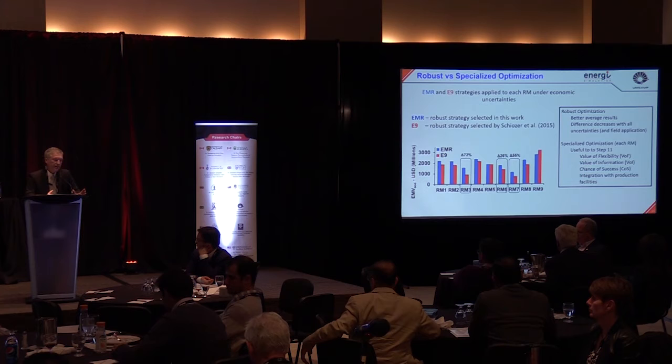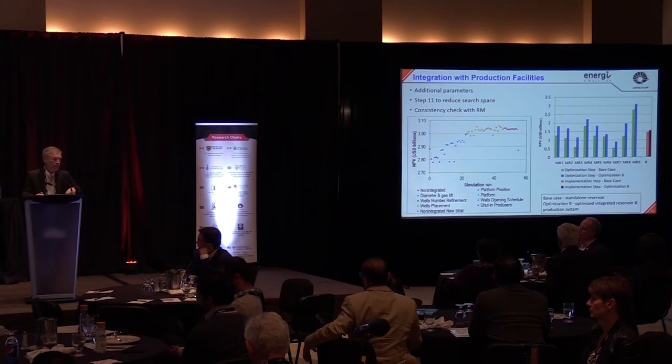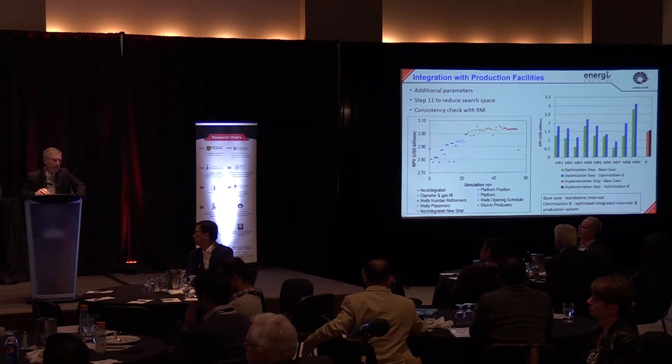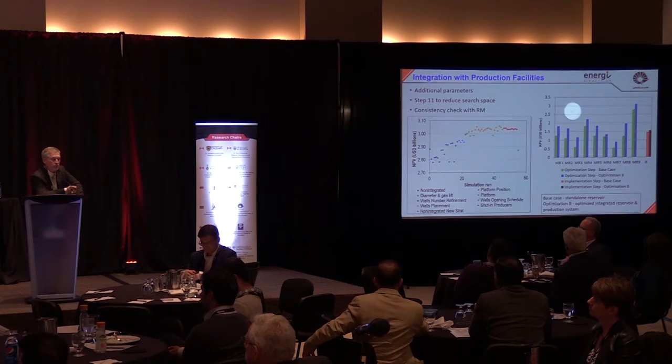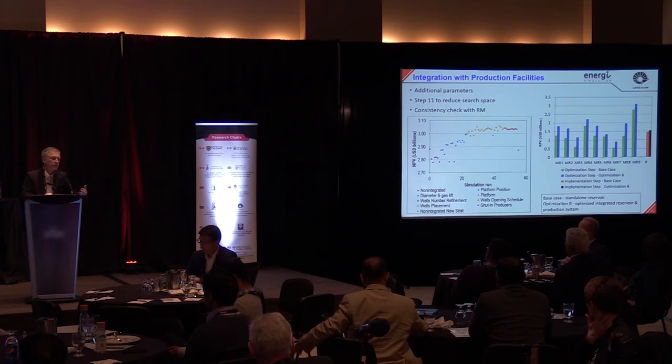We also use these representative models to integrate with production facilities, which introduces additional parameters like pipe diameter, gas lift, platform positions, and so on. We are developing methodologies to optimize all these simultaneously, including both reservoir and production facilities. On the right is an example where we optimize each representative model in this way, and then apply this to the reference model. When we optimize these representative models, we increase the chance of success for the reference case.